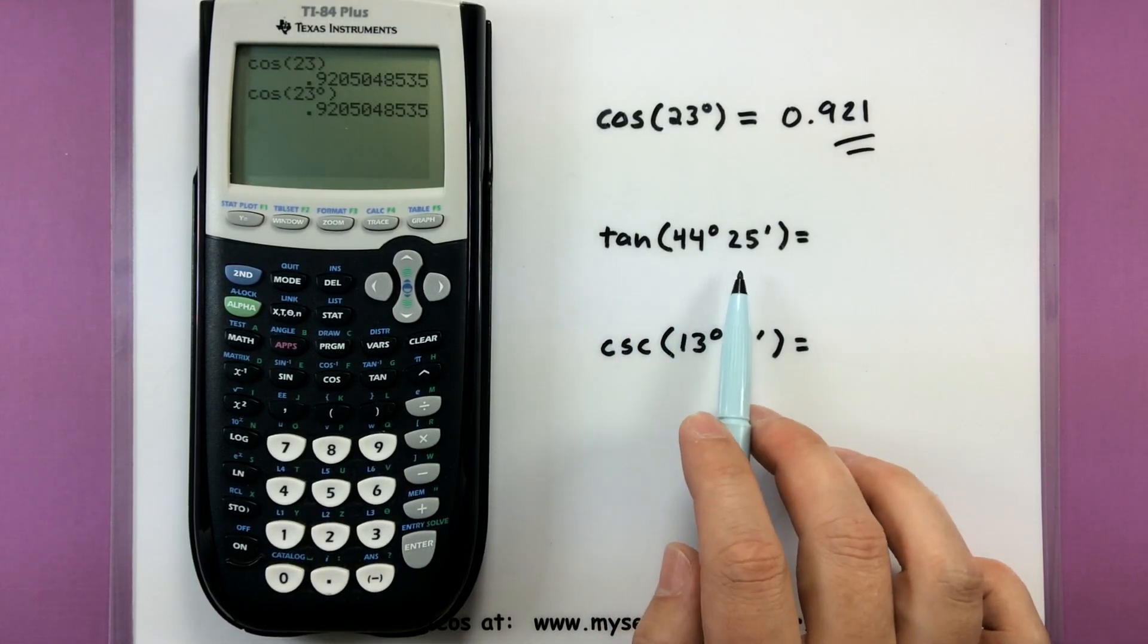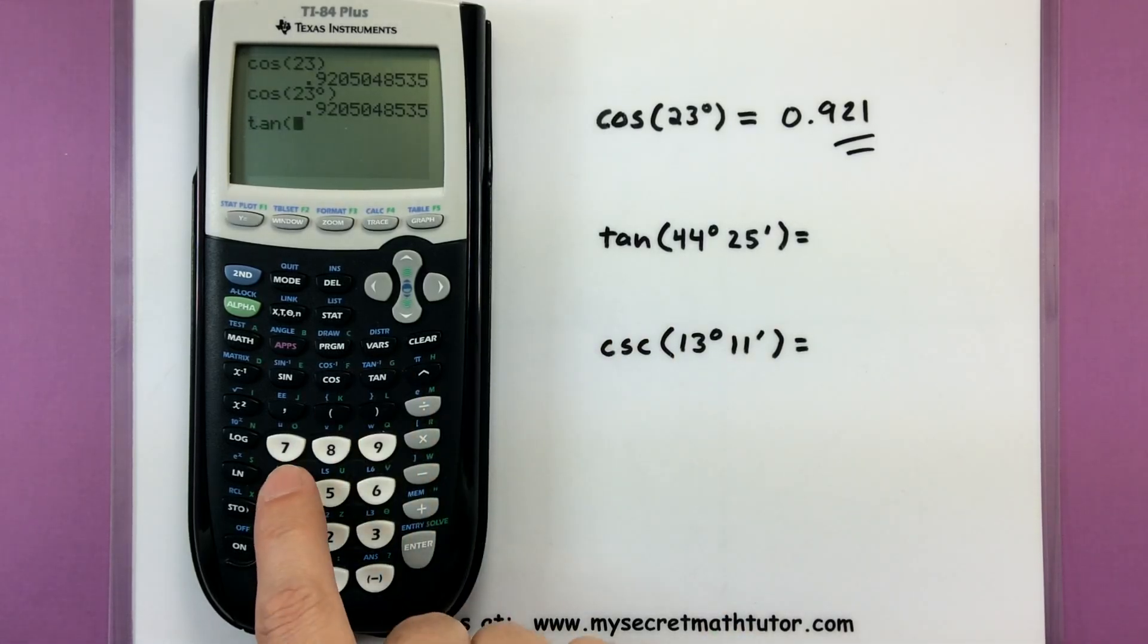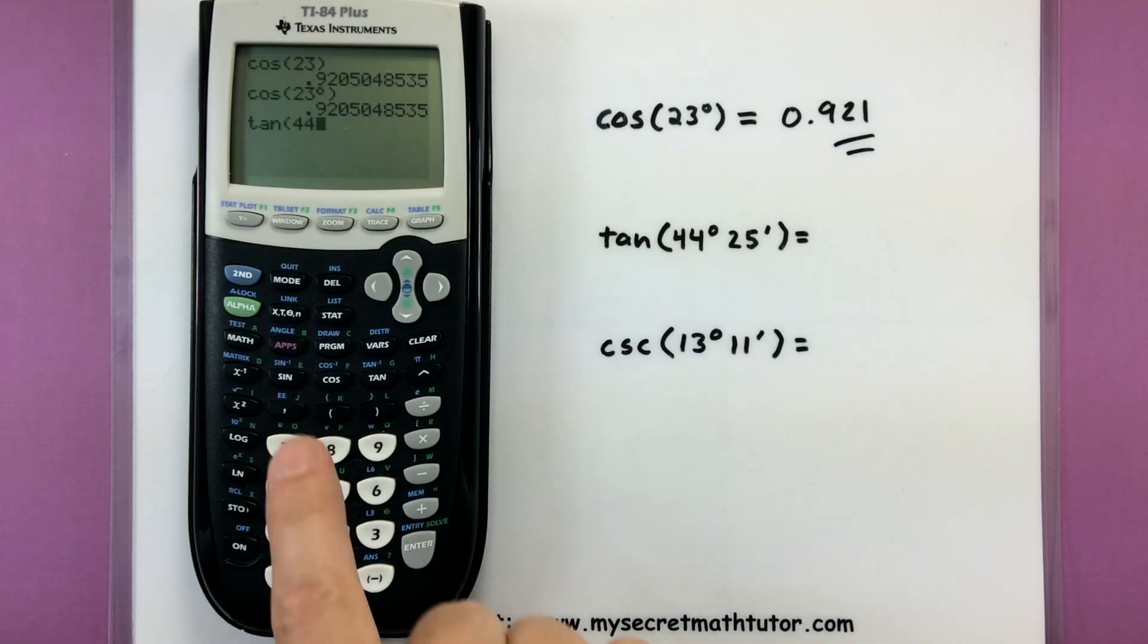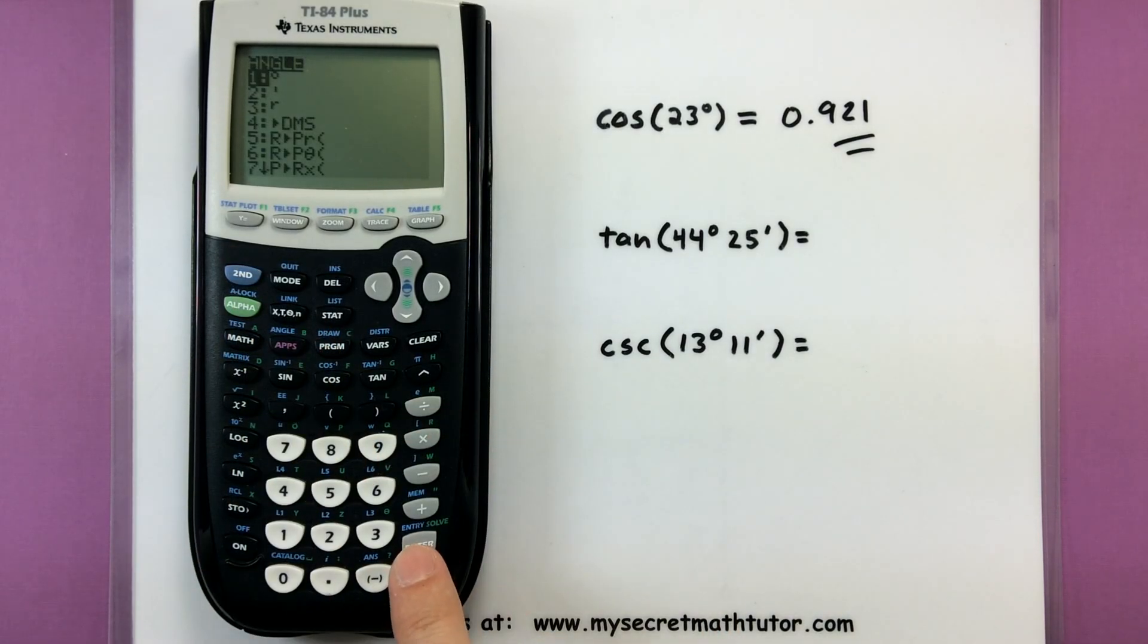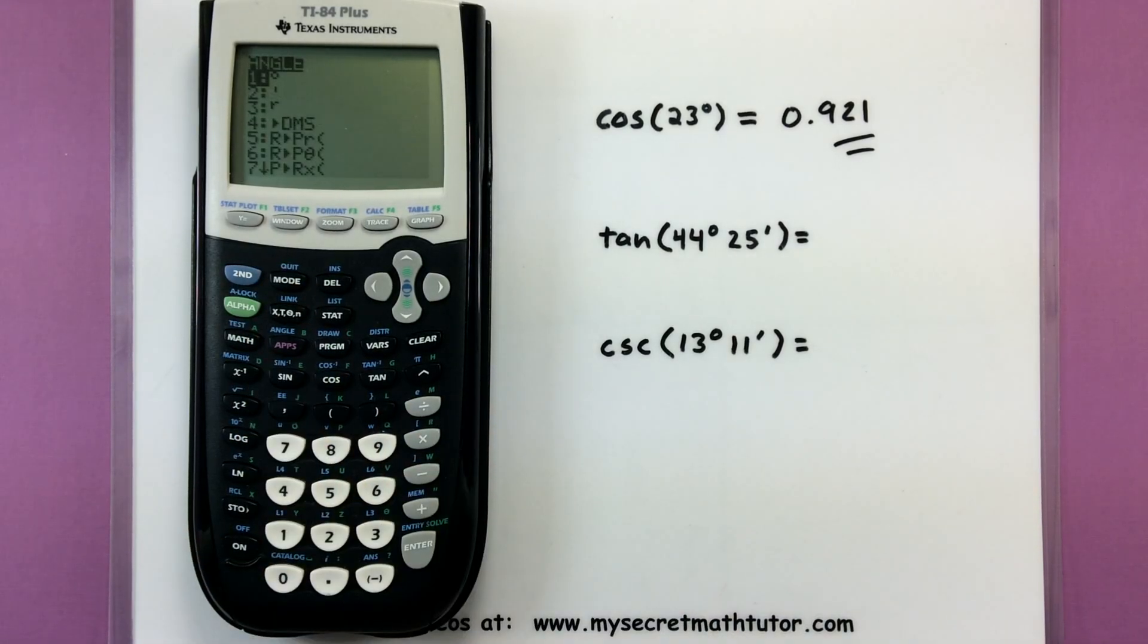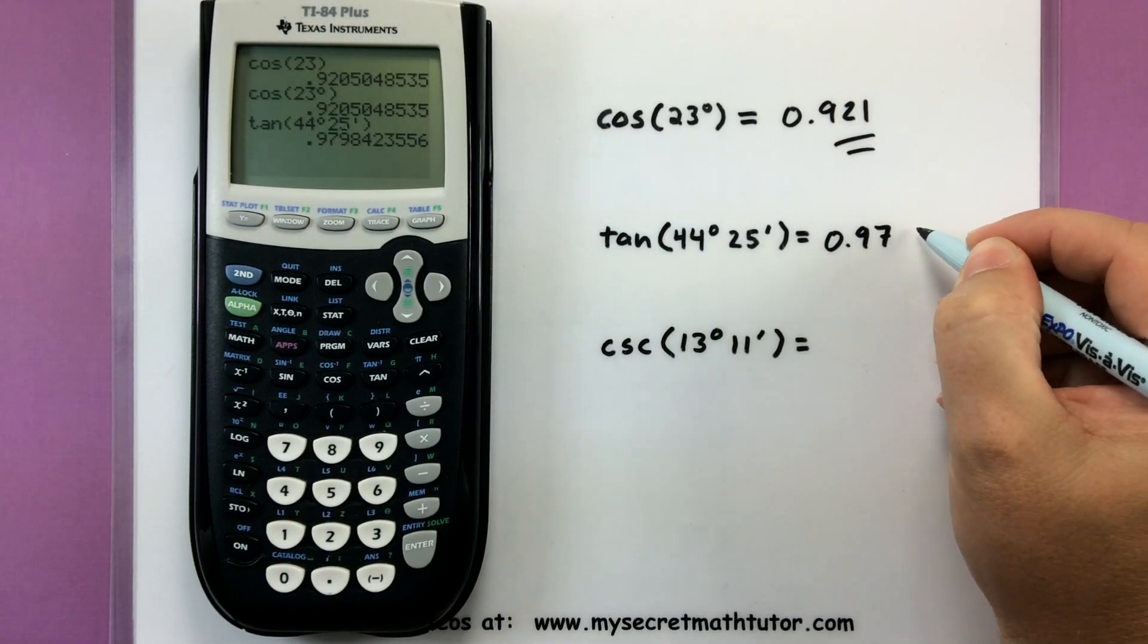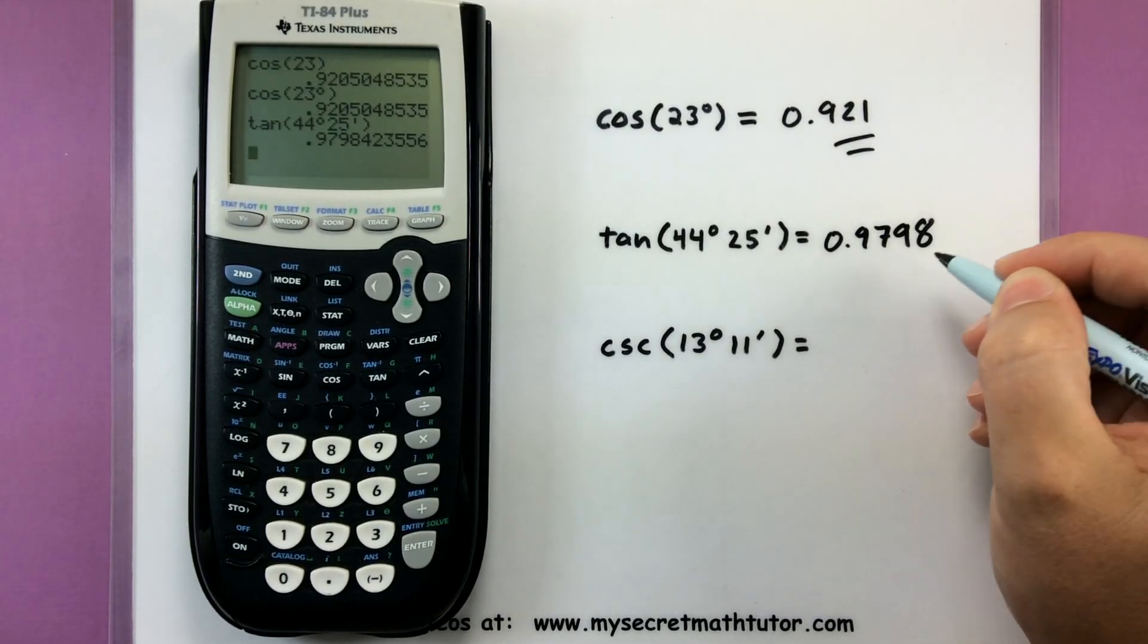Now let's do another one and we'll need to use that degree marker because I have something like 44 degrees and 25 minutes. So this one involves tangent so I'll start off with my tangent button. I'll do 44, second angle so I can put in the degree marker, enter, and then 25, second angle and I'll put in the little minute marker, so 44 degrees 25 minutes. Close our parentheses and press enter. So 0.9798.